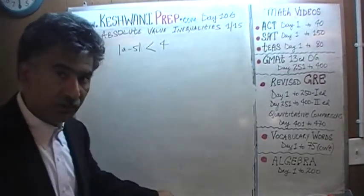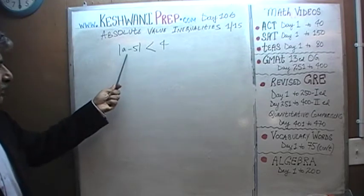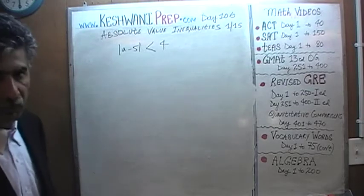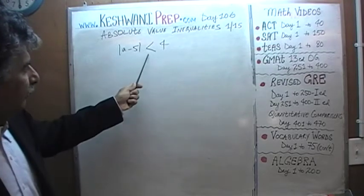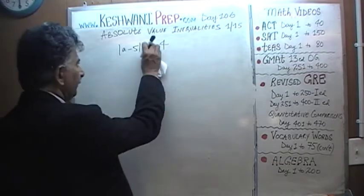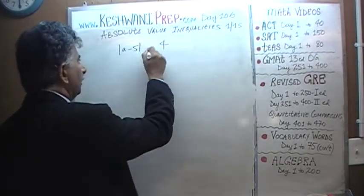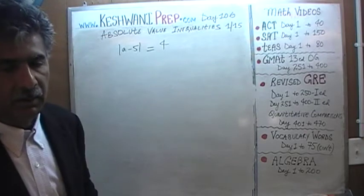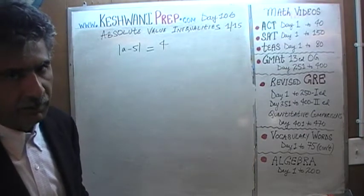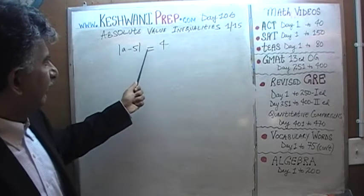The first problem is already on the blackboard. Here is what we are told: the absolute value of A minus 5 has to be less than 4. Before we deal with the inequalities, let's make it simple. Let's first ask ourselves, what would happen if we had been given an equality rather than an inequality? Absolute value of A minus 5 equals 4.